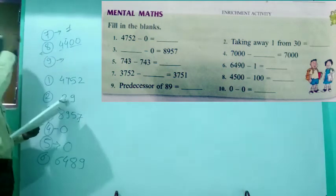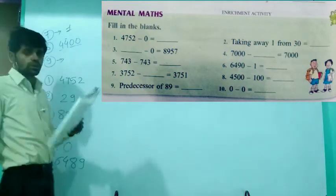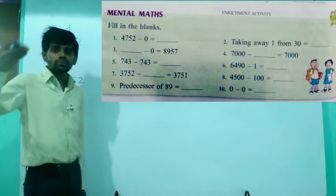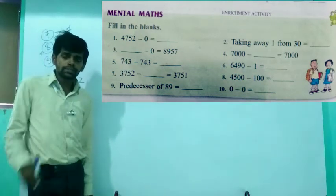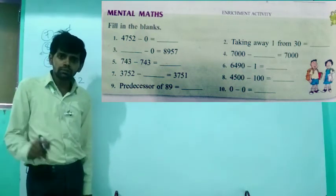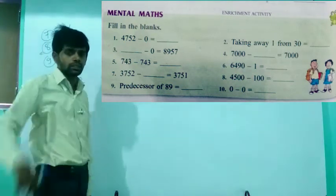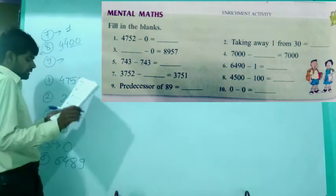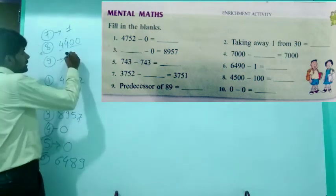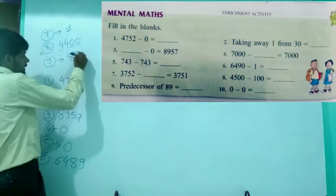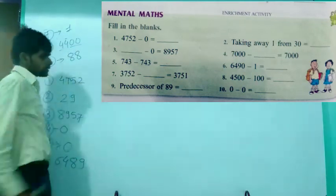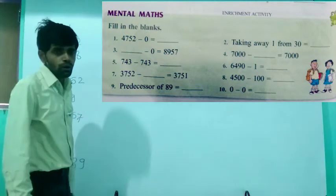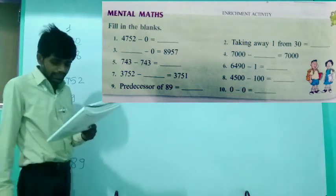The ninth question: find the predecessor of 89. We find the predecessor by subtracting 1. So 89 minus 1 gives 88. The ninth answer is 88, which is the predecessor of 89.